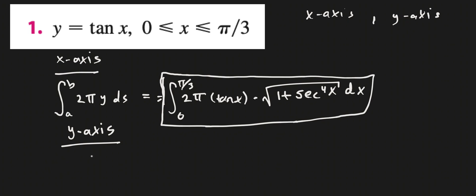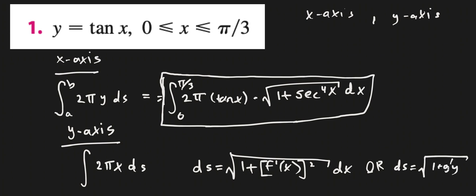But x-axis, y-axis, we have a different formula. We are looking at the integral, and then 2πx ds. But in this case, let's look at what ds would be in this case. There is again two options for us. We can look at the integral of 1 plus f'(x)² dx. Or ds is equal to the integral 1 plus g'(y)² dy.